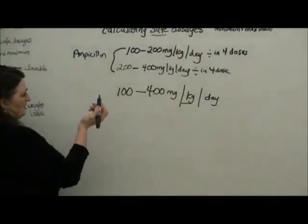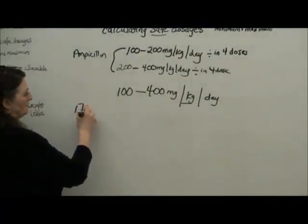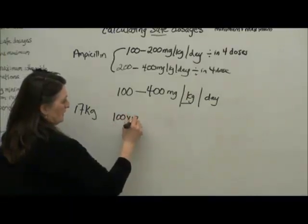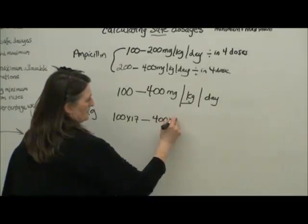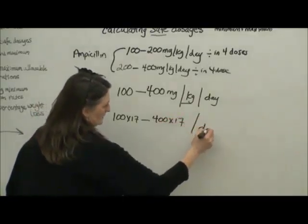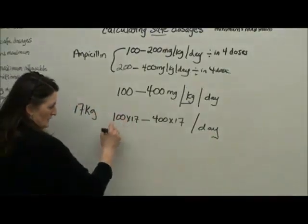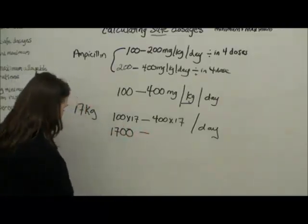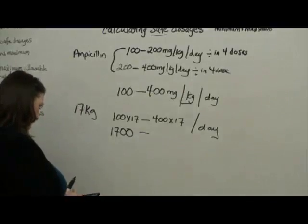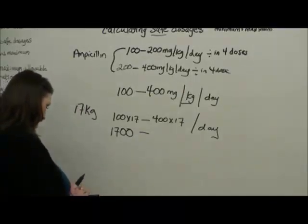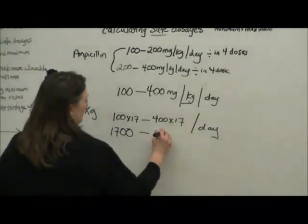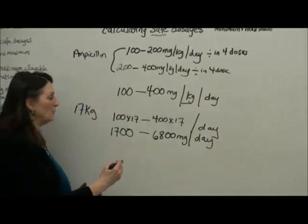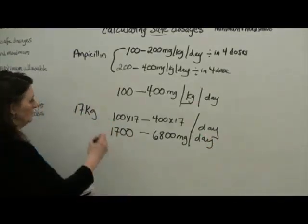So let's say my patient is a 17 kilo child. I would take 100 times 17 up to 400 times 17 in a daily dose. So 17 times 100, that's easy, that's 1,700 to 400 times 17 equals 6,800 milligrams in a day. That is total allowable dosing for this patient based on their weight.